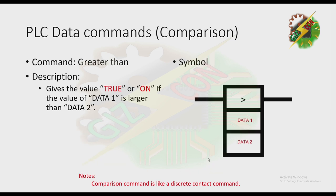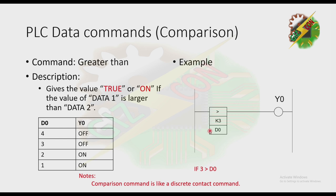Next is Greater Than — it gives the value true or ON if the value of Data 1 is larger than Data 2. This is the symbol for this command. The command means: if 3 is greater than D0. From the table: 3 is not greater than 4, so Y0 is off; 3 is not greater than 3, so Y0 is off; 3 is greater than 2, so Y0 is on; and 3 is greater than 1, so Y0 is on.